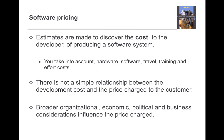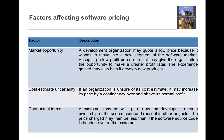Broader organizational, economic, political, and business considerations also influence the price charged. The first factor affecting software pricing is market opportunity. A development organization may quote a low price because it wishes to move into a new segment of the software market. For example, a company currently working on Java applications may want to move into Android/mobile app development, so it accepts Android projects at a lower price to gain market identity, and later increases prices to recover earlier losses.